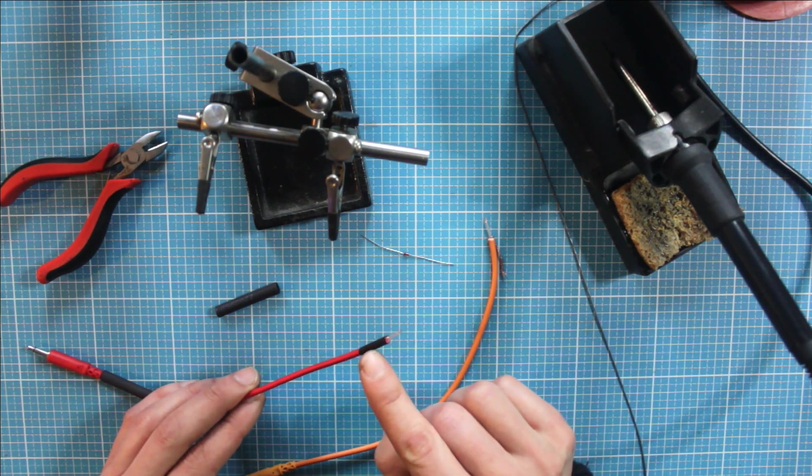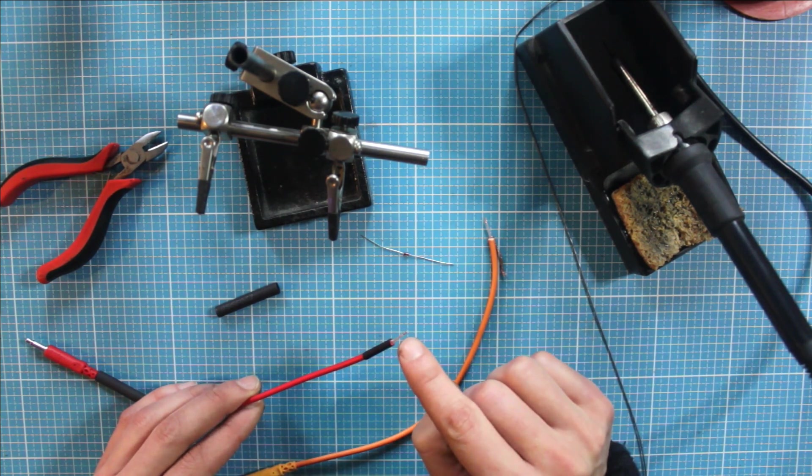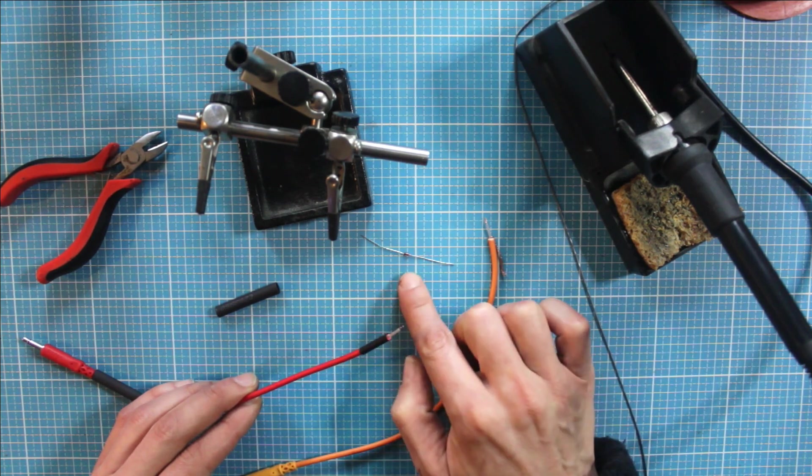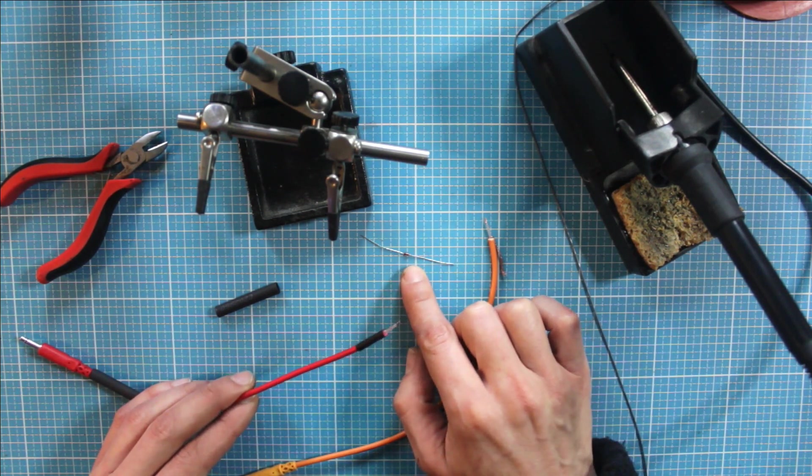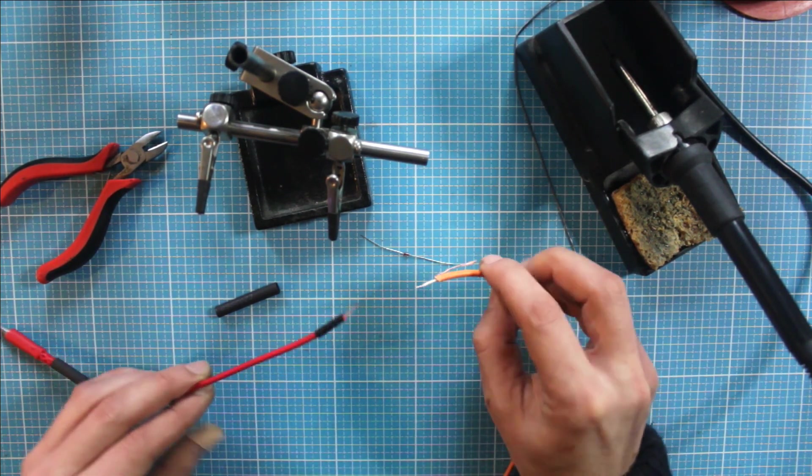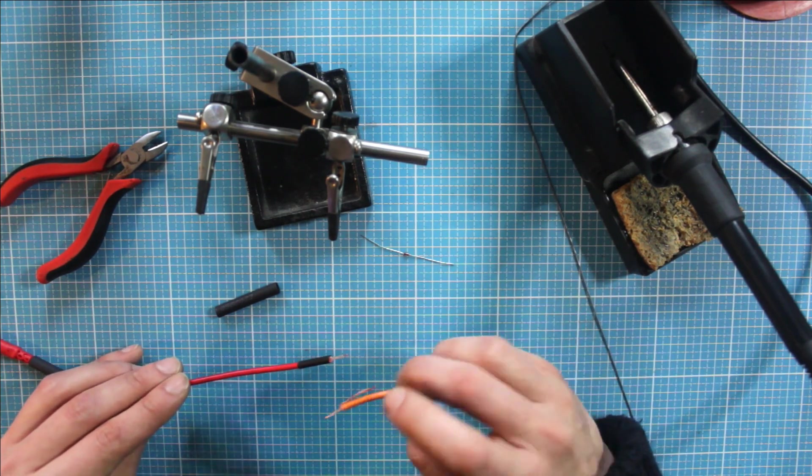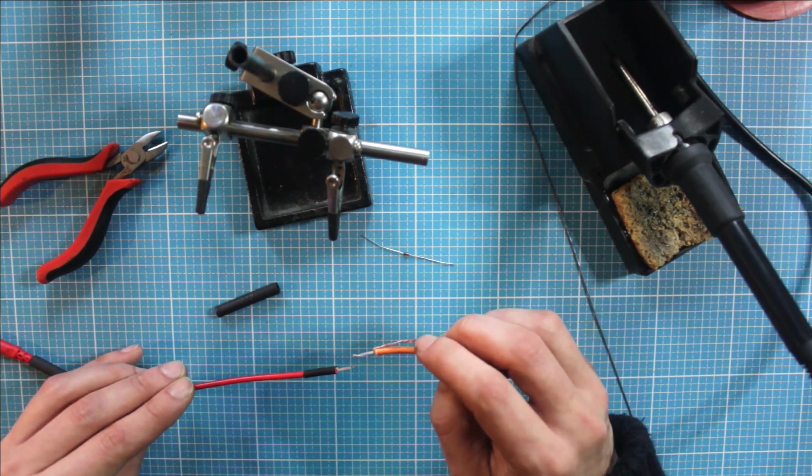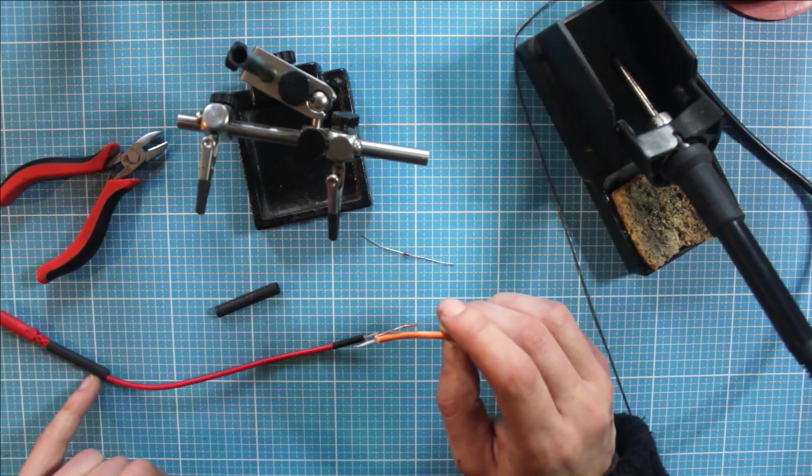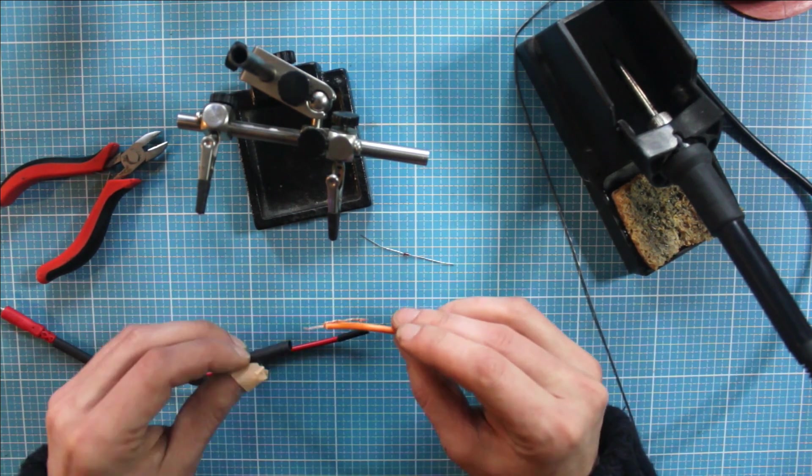As you can see, I already put some here to isolate the center cable after I put the diode. The idea is just to put the diode between these two wires, put the heat shrink, solder the ground, and put the new heat shrink.